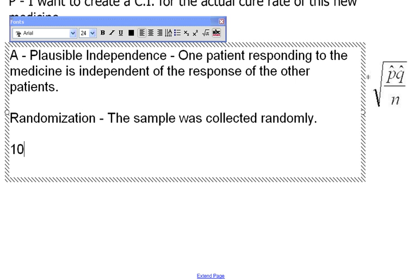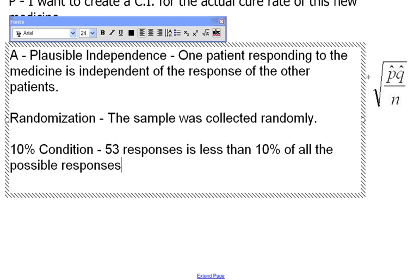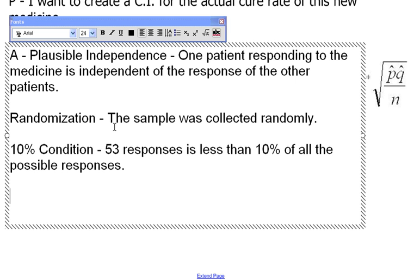After that, we've got our 10% condition. And we can say that 53 responses is less than 10% of all the possible responses. Now keep in mind, in that case, we're not really testing the people. We're testing the medicine and their response to the medicine. So the 10% condition might not really have to be applied to this. But we'll go ahead and state that. We would hope that they eventually would give this medicine to more than 530 people. So the 10% condition is satisfied.